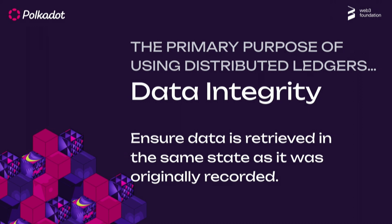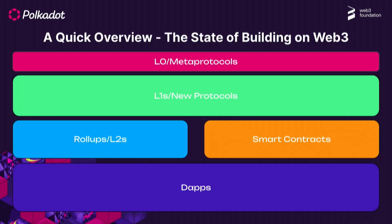We want to ensure that data is retrieved in the same state it was recorded, and generalize that across the board. Now before we dive into layer one and protocol development, let's look at the current state of Web3. You can classify the Web3 stack very broadly into layers: layer zero is a meta protocol like Cosmos or Polkadot which connects blockchains together.